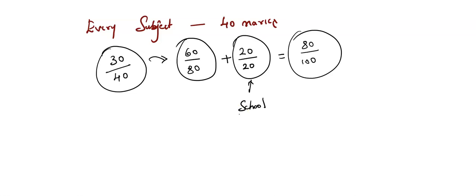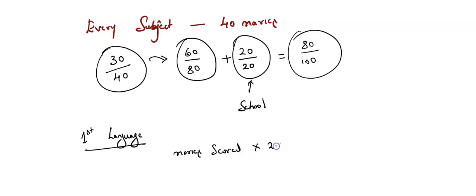Now the very important question: how will the results be disclosed — in percentage or marks? Before that, I want to tell you that only for the first language, if you want, you can keep this formula: marks scored multiplied by 2.5, then add your internal assessment marks — that is your total marks for the first language.